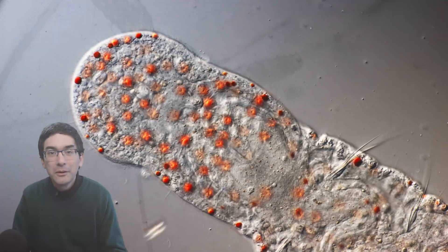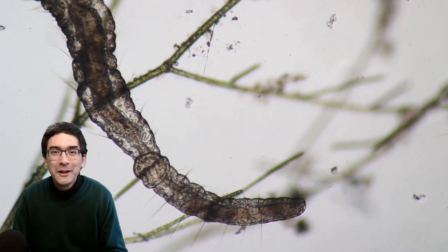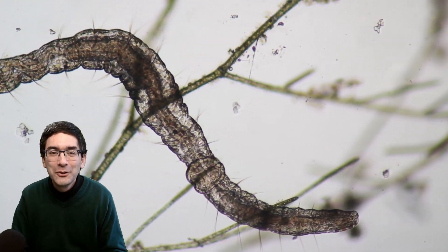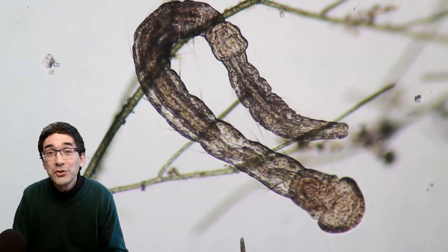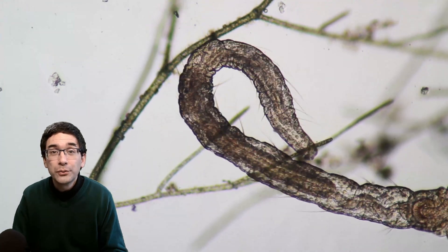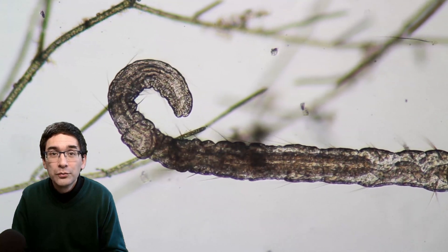Iolosoma has a remarkable ability to regenerate. Once cut in half, both parts continue to live on. This ability to regenerate also makes it very suitable for asexual reproduction, which is apparently one of the main ways this worm reproduces.